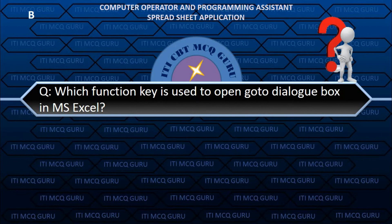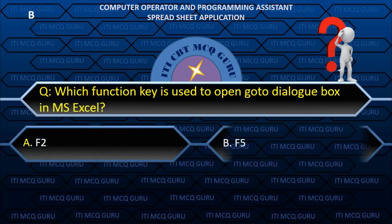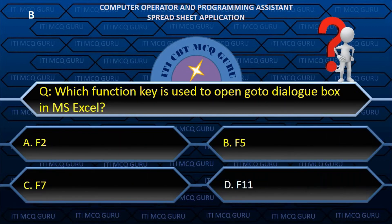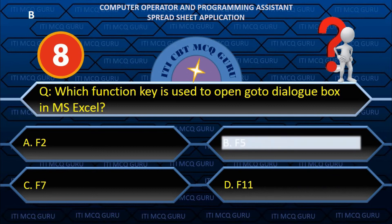Which function key is used to open the Go To dialog box in MS Excel? B. F5.